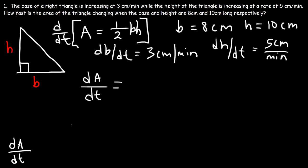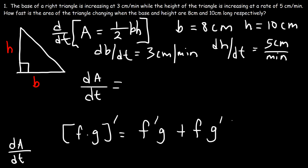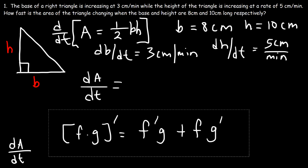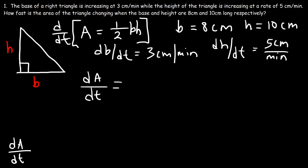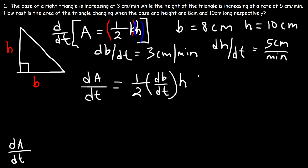Recall that if you wish to differentiate f times g, it's going to be the derivative of the first times the second, plus the first part times the derivative of the second part. Let's say f is one-half times the base and g is the height. The derivative of one-half b is one-half times db/dt, differentiating with respect to time. Then it's times the second part, plus the first part times the derivative of h, which is dh/dt.